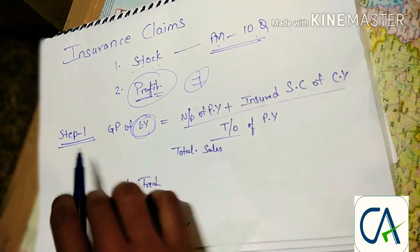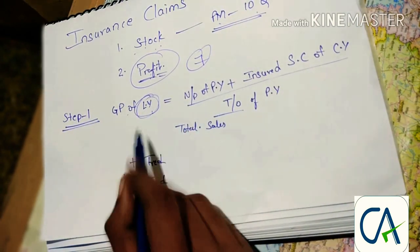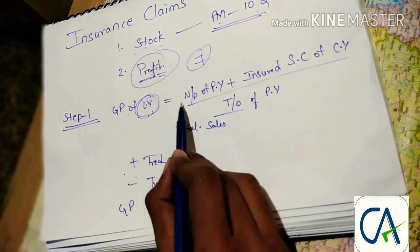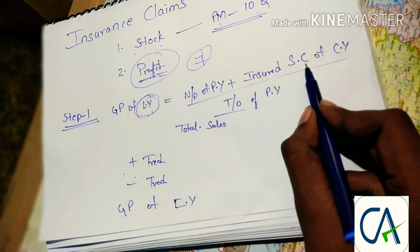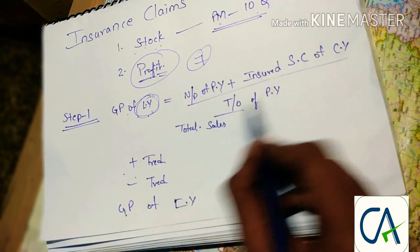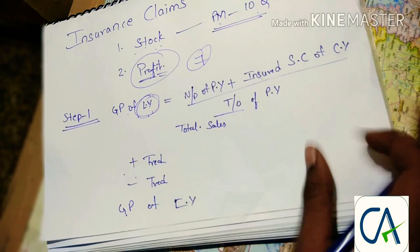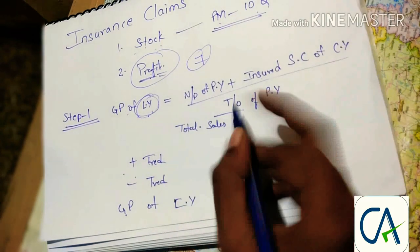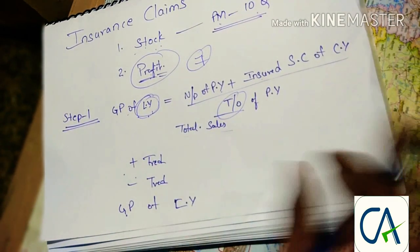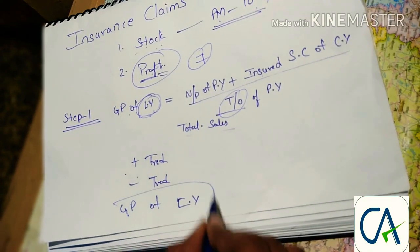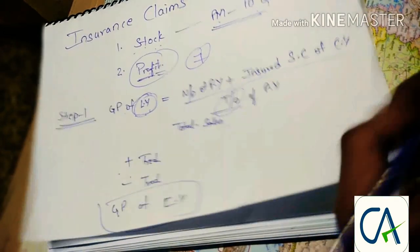Step one: gross profit ratio of last year. The formula is: net profit of previous year plus insured standing charges of current year, divided by turnover of previous year. Turnover means nothing but total sales. You then adjust the sales by adding or subtracting the trend, and you will get the gross profit of current year after adjusting the trend.